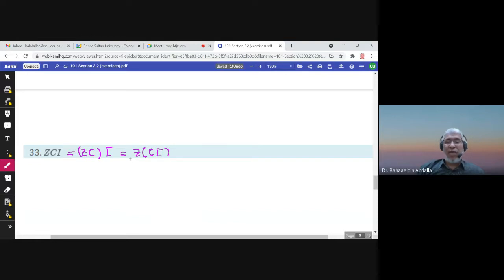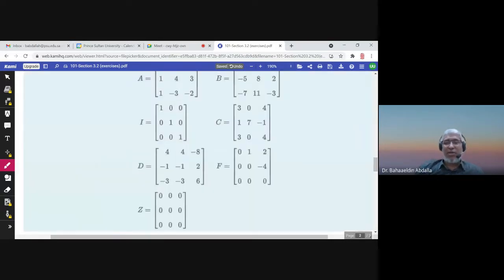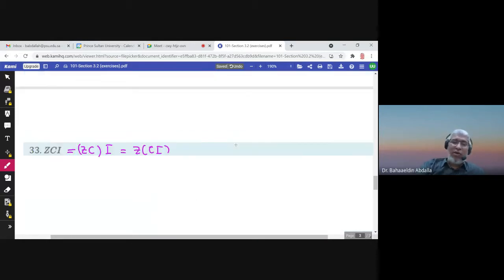In both cases, if you multiply Z times C, zeros times this column will give you zero. So in fact, you will get Z, or the zero matrix. Because Z times C, also C times I will give you C, and Z times C will give you zeros, and zeros times I will give you zeros. So you will get the zero matrix at the end.